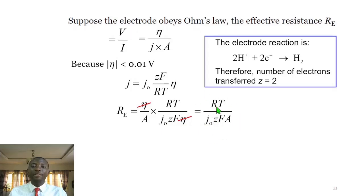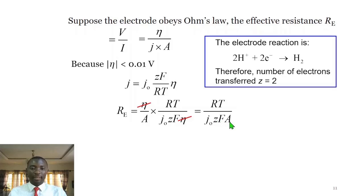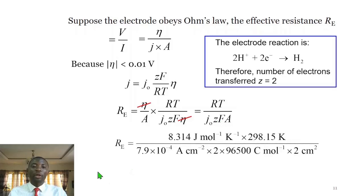The resulting expression for effective resistance R_E involves: R, the gas constant; T, the temperature; J0, the exchange current density; Z, the number of electrons transferred; F, Faraday's constant; and A, the surface area of the electrode. Substituting all values — gas constant 8.314, temperature 298.15 K, exchange current density, Z equals 2, Faraday's constant 96,500, and area 2 cm² — we evaluate the expression to obtain the effective resistance.